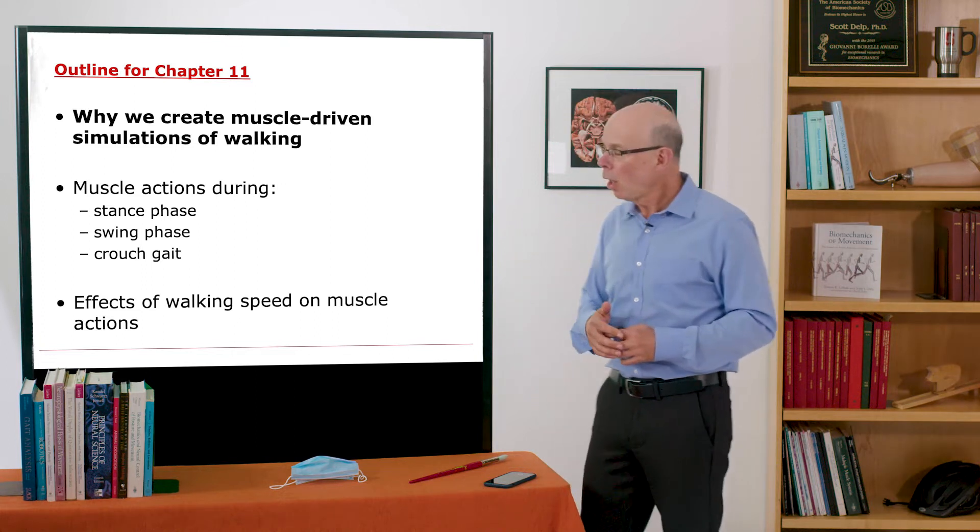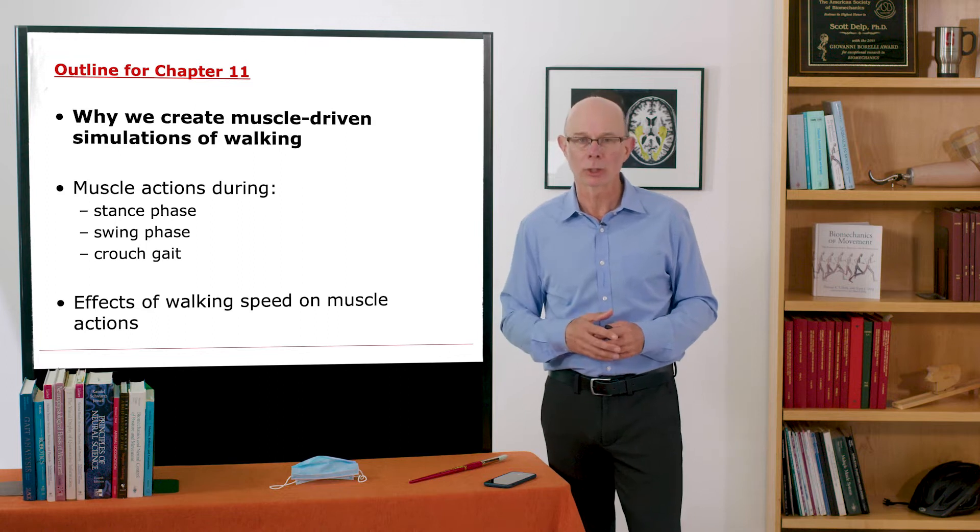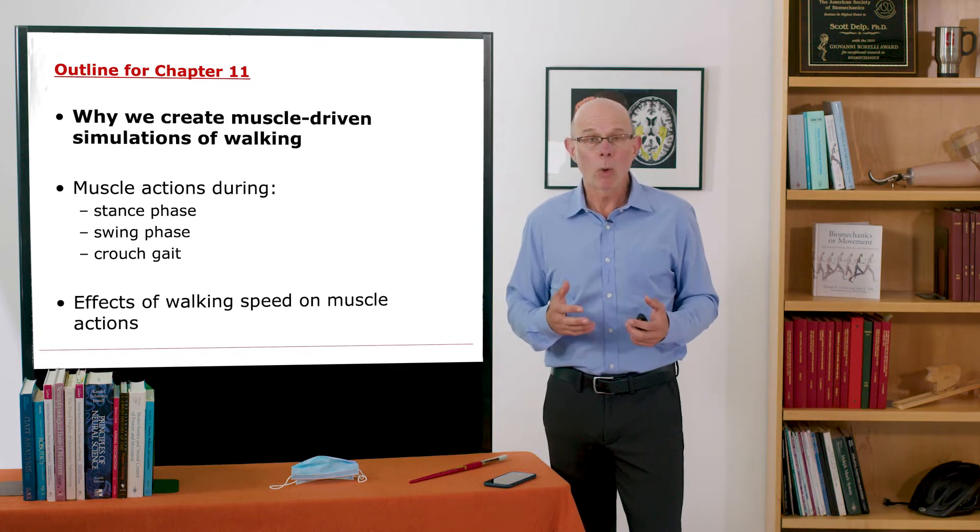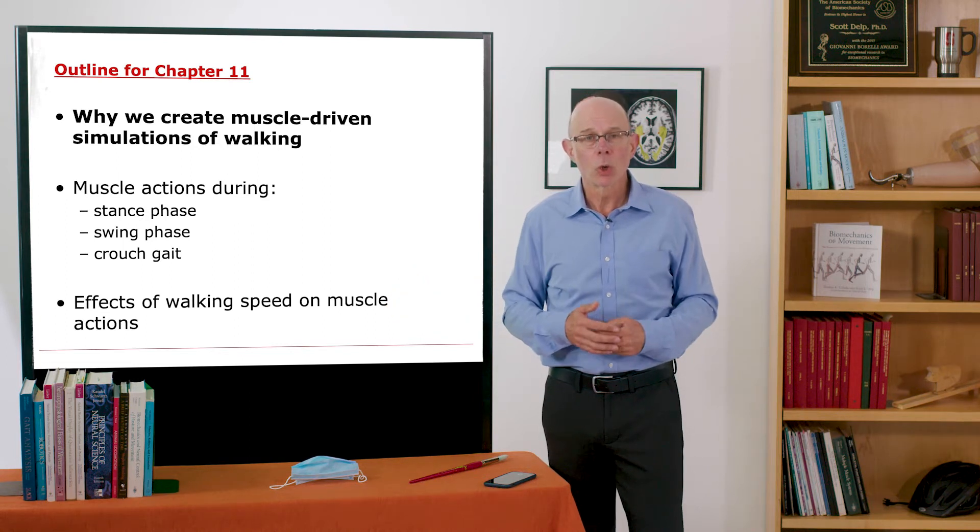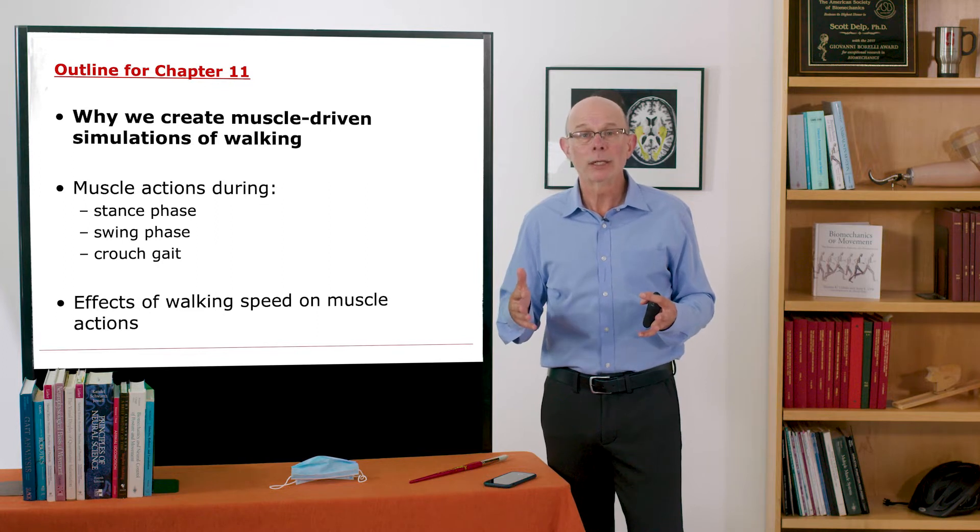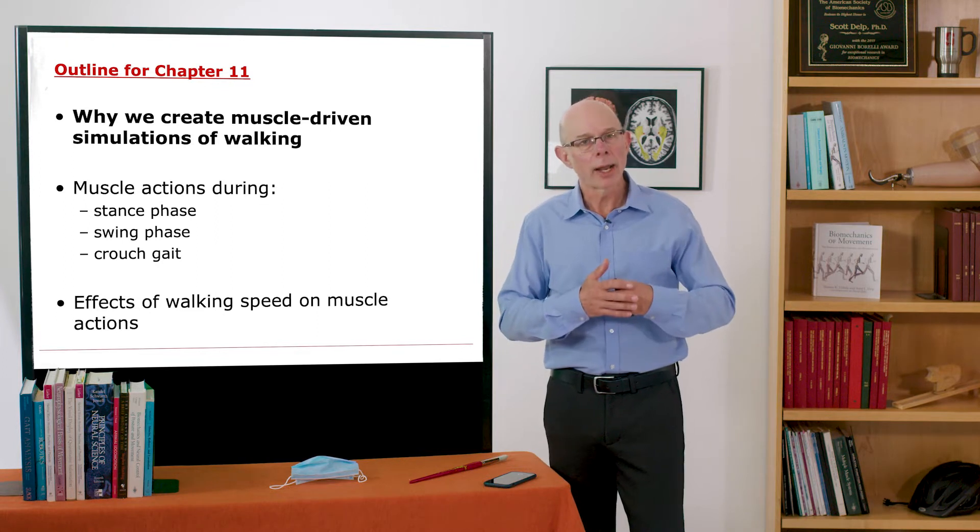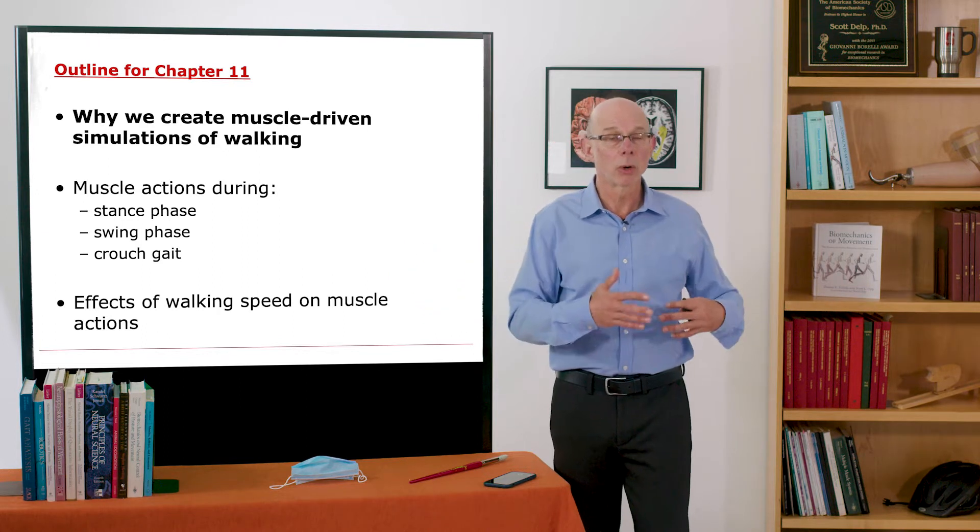We'll close out by looking at the effects of walking speed on muscle actions. We care about walking speed because of course we walk at different speeds, and many individuals who have physical limitations walk at a very slow speed. So we need to know muscle actions not just at self-selected typical speed, but also at much slower and much faster speeds.